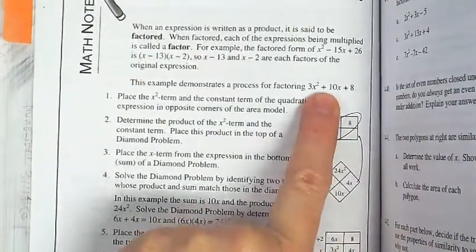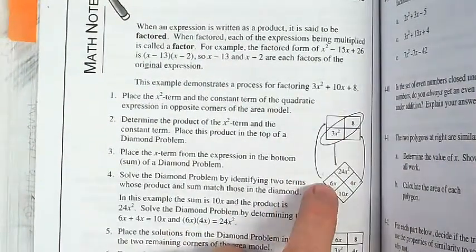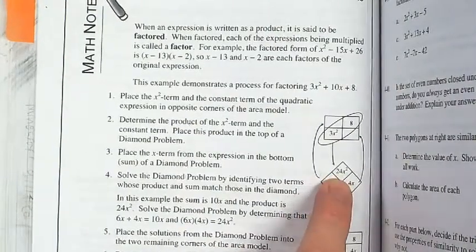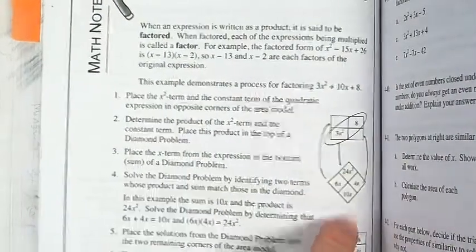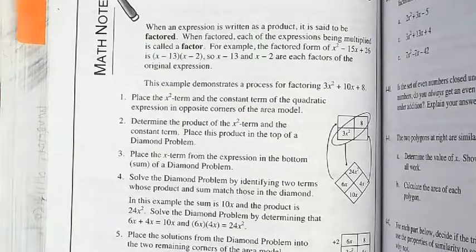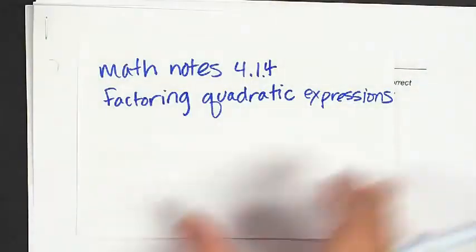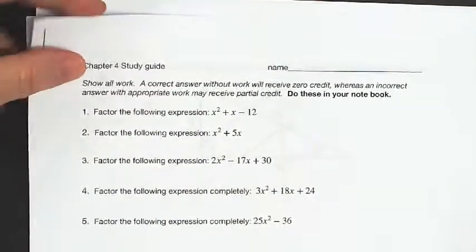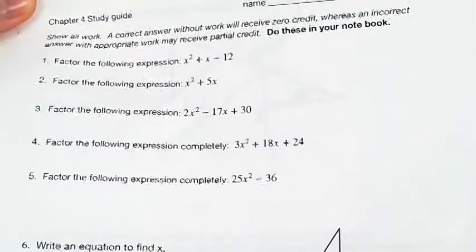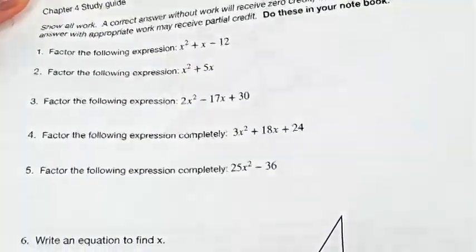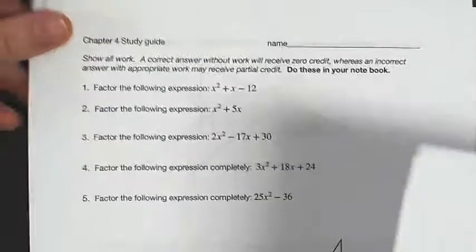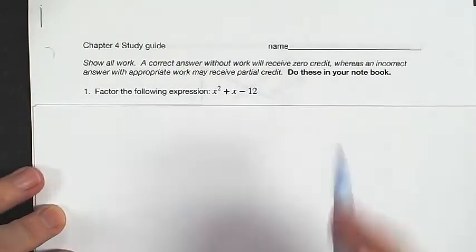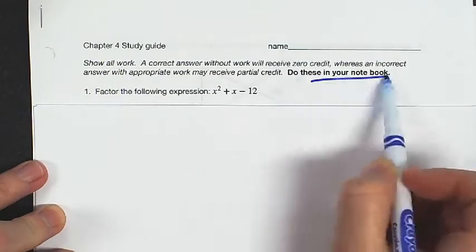We're looking for two terms that when I multiply them I get 24x-squared, for example, because we notice that when you multiply the diagonals, the cross-products are equal. And because I know I have 10x tiles, I know I need to split them up so that they multiply to the top number and add up to the bottom number. I purposely didn't make a lot of room on the study guide, so do these in your notebook.